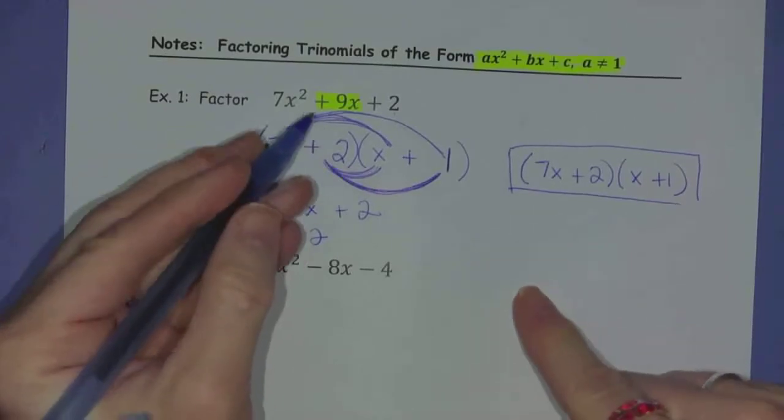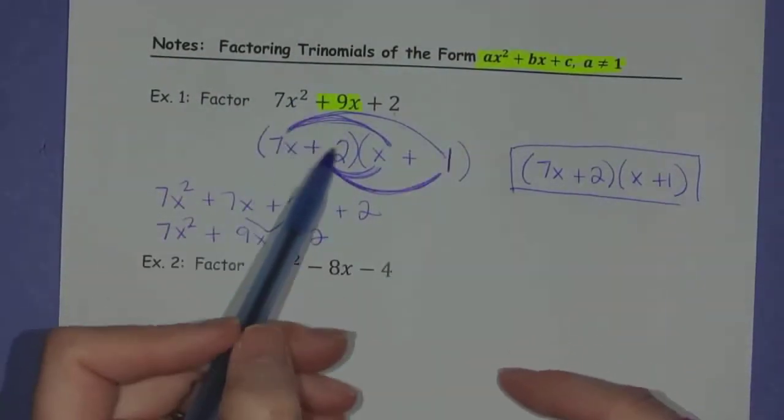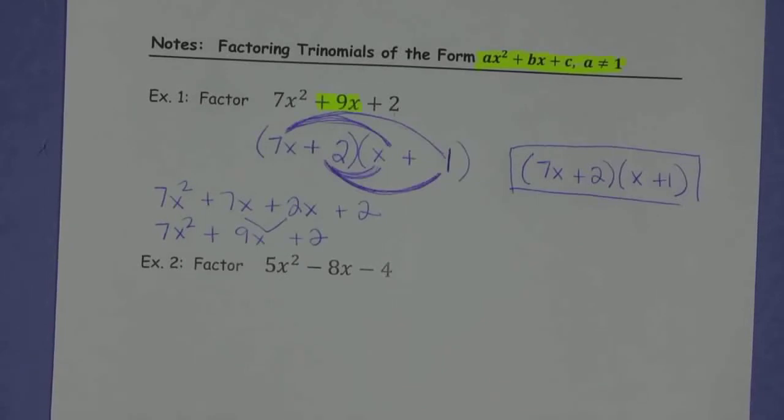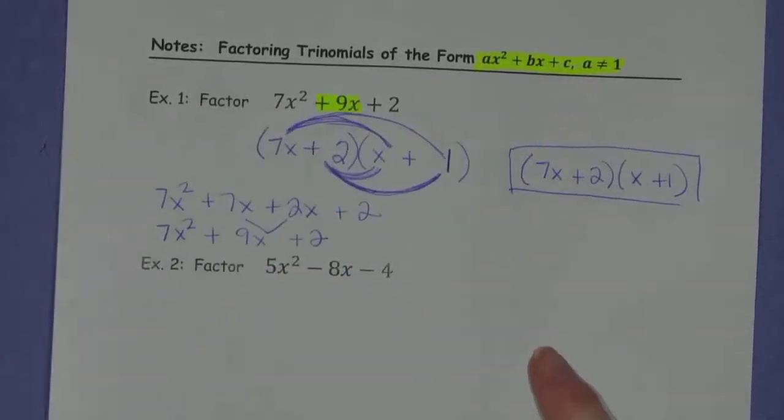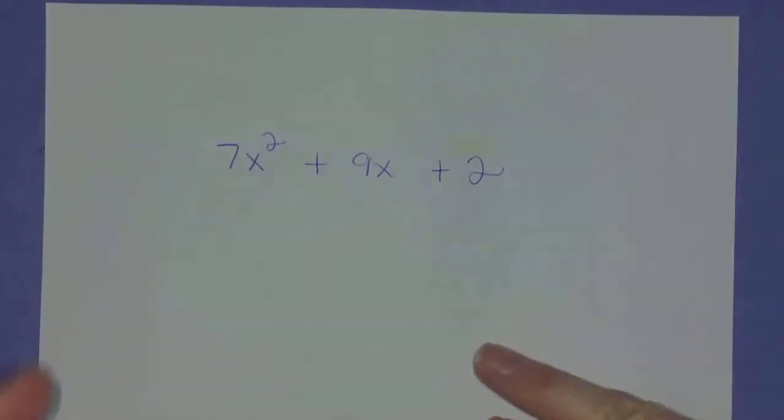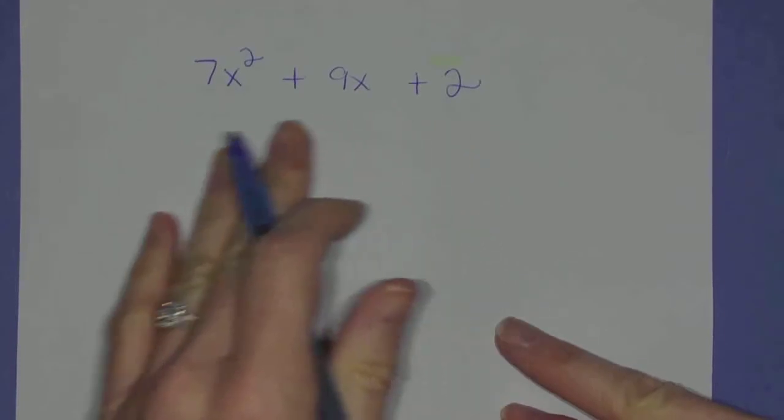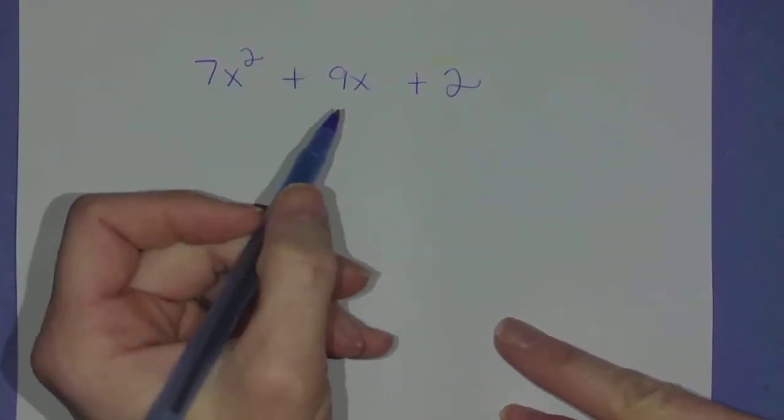Now when I say I was going to do it a second way, I'm not really doing it a second way. But I guess I could call this a strategy if you want to use it. So let me flip this over. Let me rewrite that same problem: 7x squared plus 9x plus 2. If this strategy I'm going to show you helps you to sort of organize your work, then by all means use it.